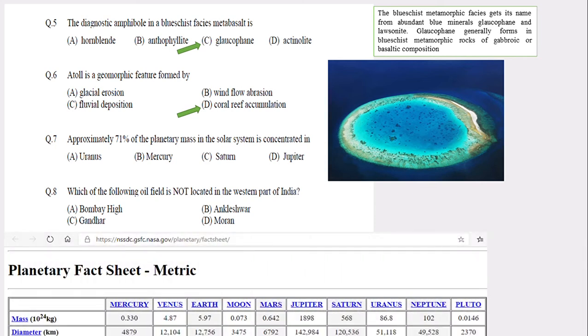This is the list of planet masses given by NASA. If we see the mass, Jupiter's mass is 1898, which is the maximum highest value in this series. So the answer will be Jupiter.